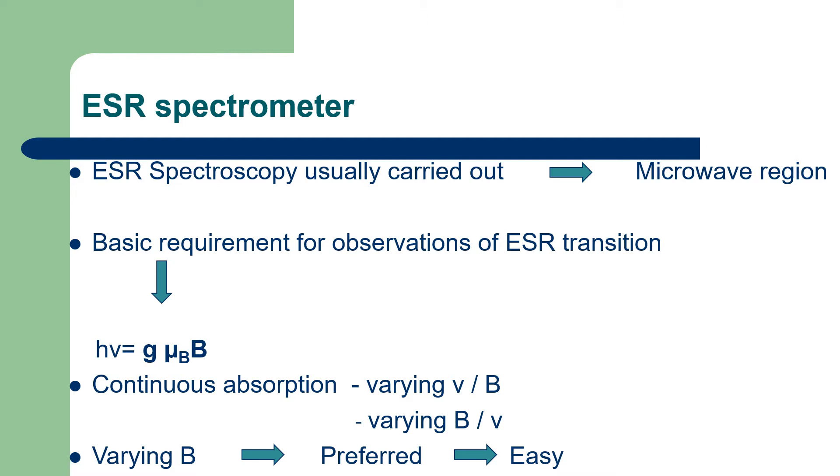The basic requirement for observing ESR transition is the resonance condition hν = gμB. We can attain this resonance condition by continuously varying the incident frequency ν and keeping the external magnetic field B constant. The second method is varying the external magnetic field B and keeping ν constant. The second method is easy because we can vary the external magnetic field easily, so it is preferred over the first one.